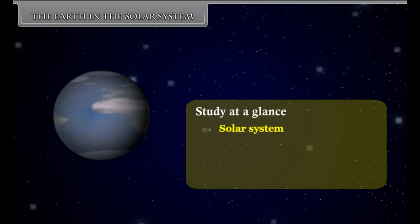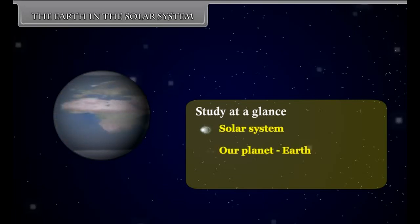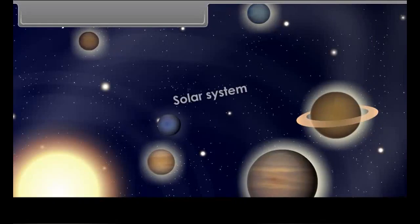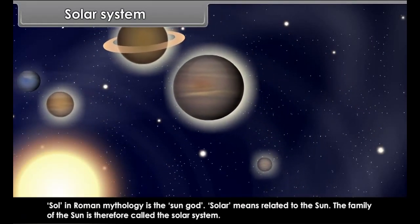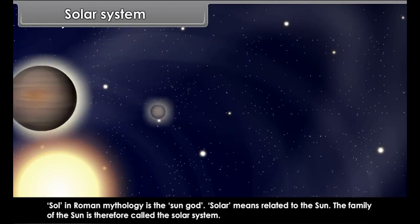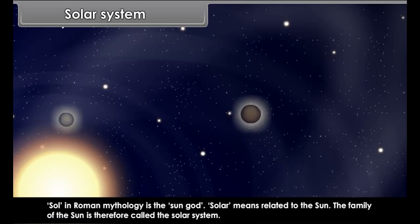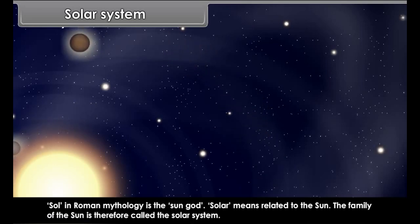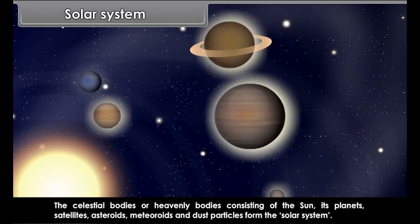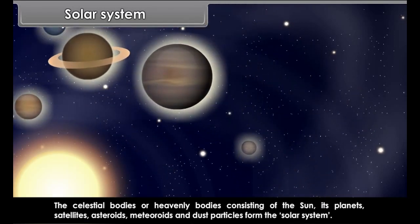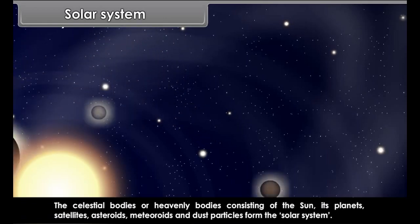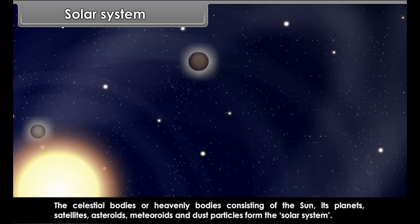Our planet Earth has only one companion — the Moon. Sol in Roman mythology is the sun god, so solar means related to the sun. The family of the sun is therefore called the solar system. The celestial bodies or heavenly bodies consisting of the sun, its planets, satellites, asteroids, meteoroids and dust particles form the solar system.